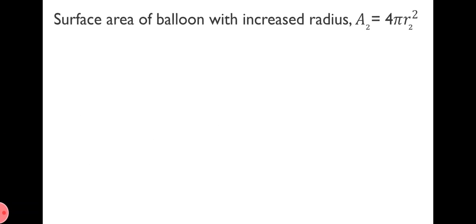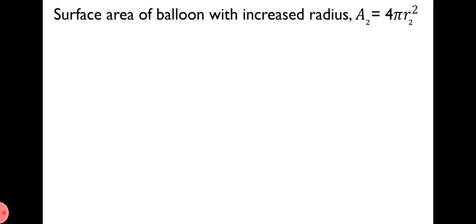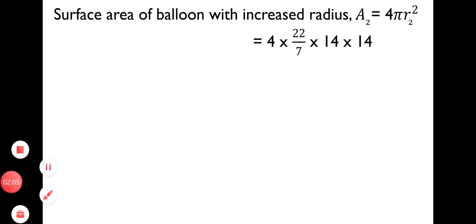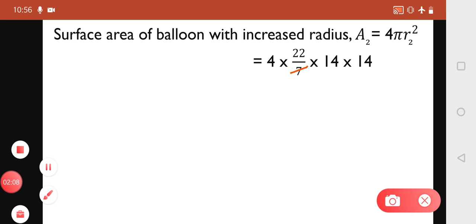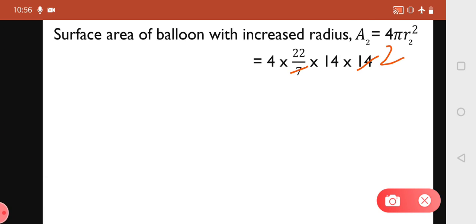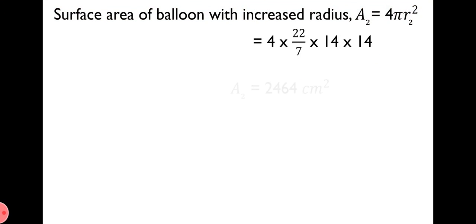Next, we find the surface area of the balloon with increased radius. Therefore, surface area of the balloon with increased radius A2 = 4πr2². The value of r2 is 14 cm. Inserting the values, we get 4 × (22/7) × 14 × 14. Here we can cancel 7 with 14. When we multiply the remaining numbers, the product is 2464. Therefore, A2 = 2464 cm².